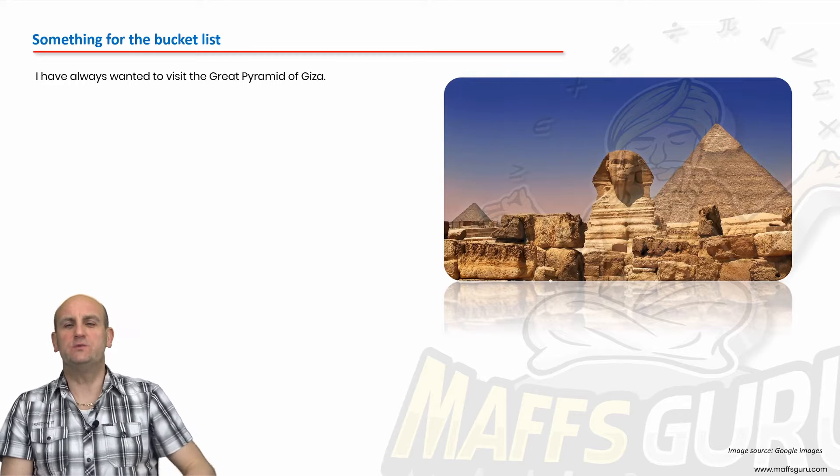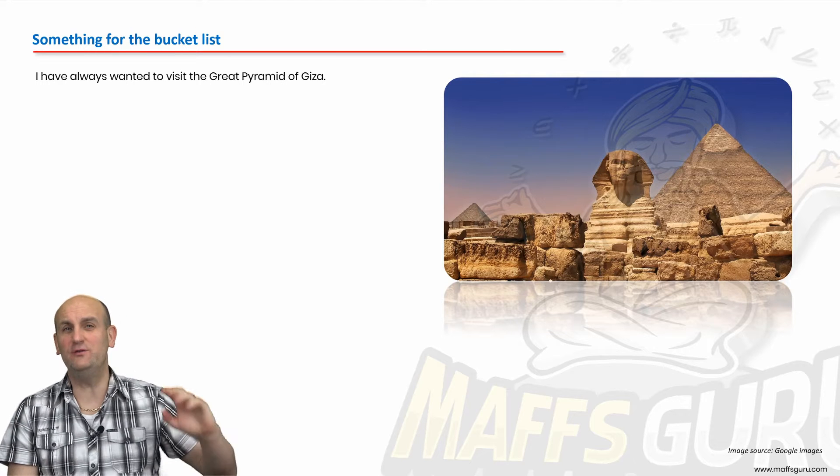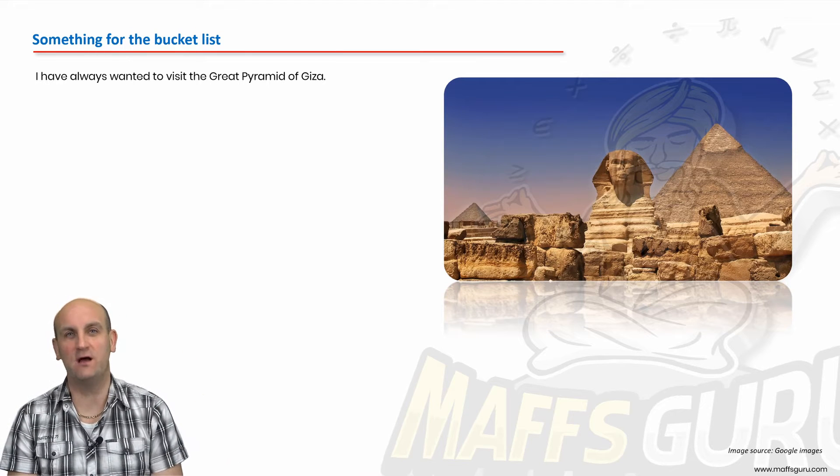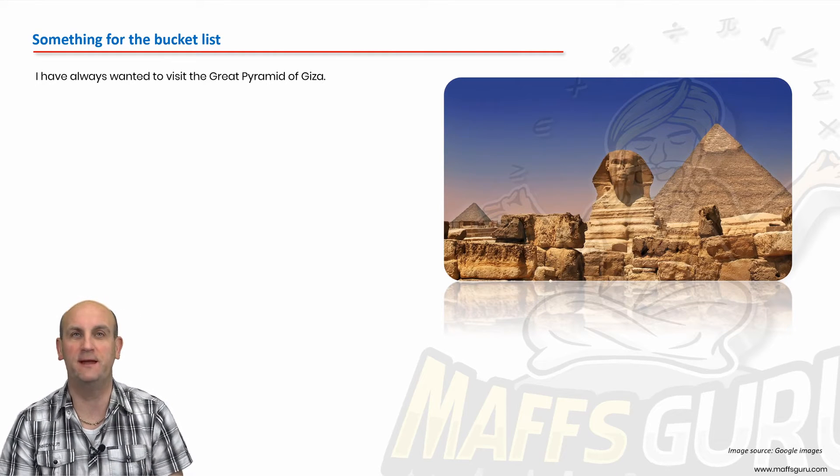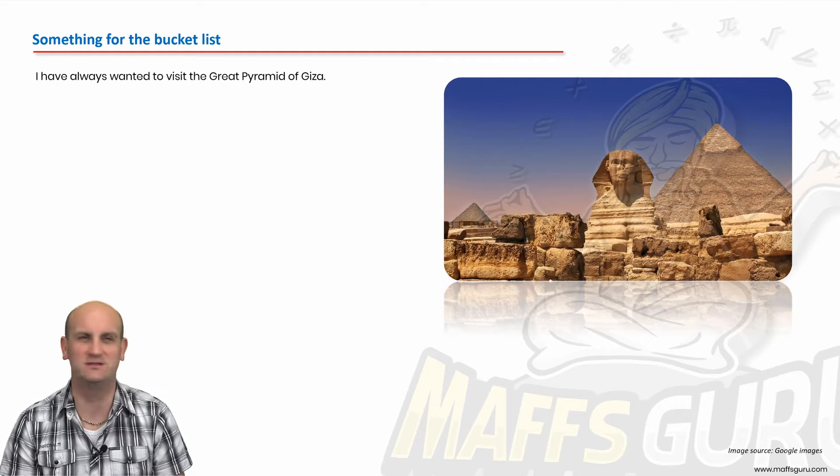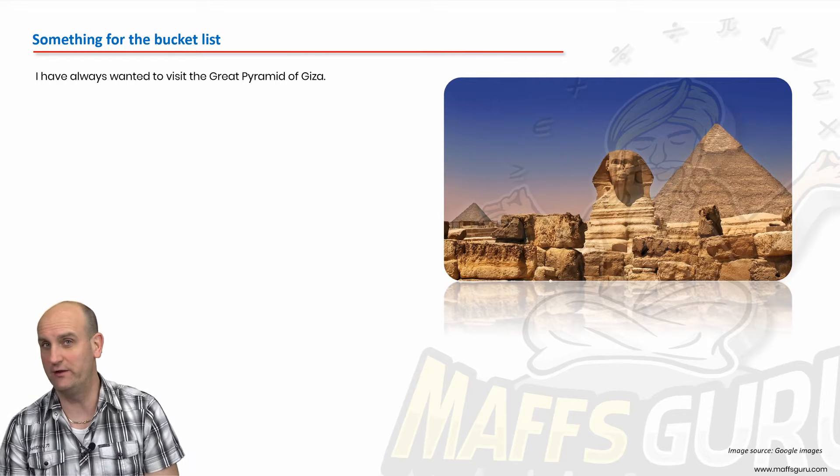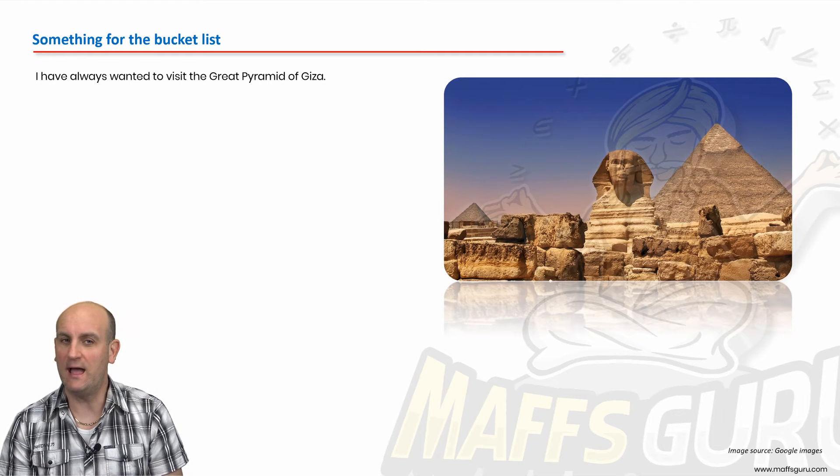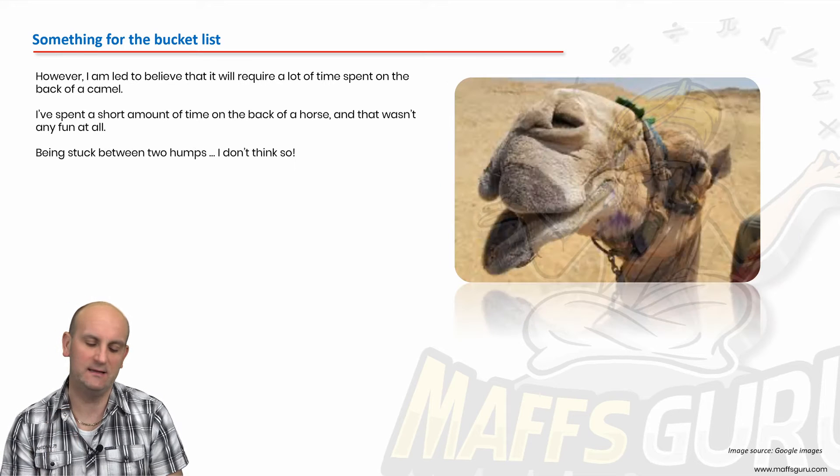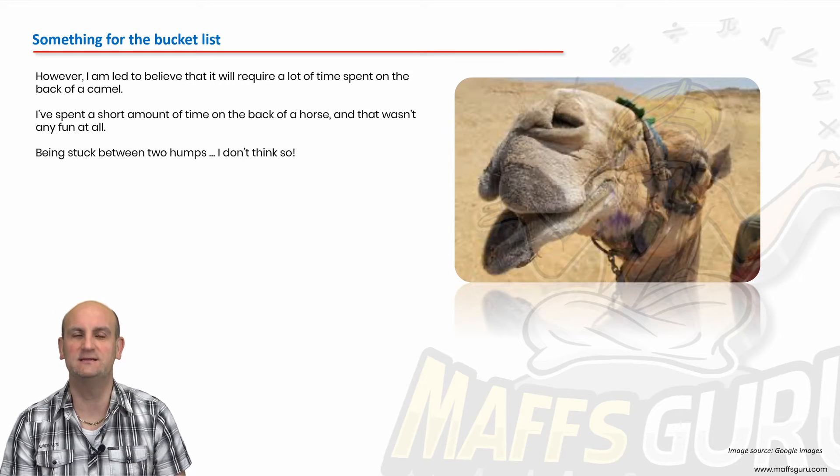Something for the bucket list. Years ago I used to watch National Geographic about Egypt because I desperately wanted to go to the Great Pyramids. I really could think of nothing better. The hieroglyphics, the architecture, the spooky stories of curses, sounded brilliant to me. I really wanted to go there. But unfortunately, apparently you need to spend an inordinate amount of time on the back of a camel.